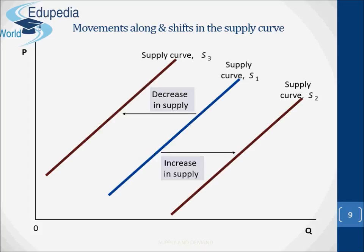In this figure, if the original curve is S1, the curve S2 represents an increase in supply — more is supplied at each price — whereas the curve S3 represents a decrease in supply — less is supplied at each price. A movement along a supply curve is often referred to as a change in the quantity supplied, whereas a shift in the supply curve is simply referred to as a change in supply.